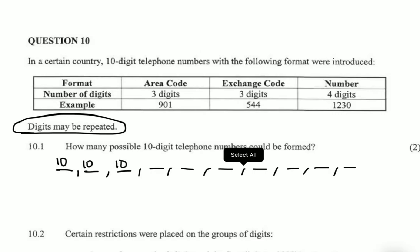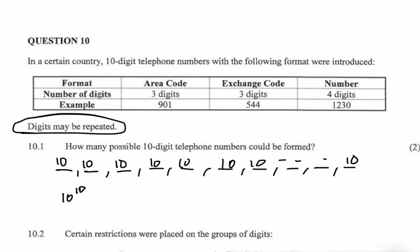For the third digit we're picking from 10 numbers, and so on until the last digit. So we have 10 to the power of 10 — that is, 10 multiplied by 10 by 10 by 10 by 10 for 10 digits. So the number of possible 10-digit telephone numbers that can be formed is 10 to the power of 10, if the digits may be repeated.